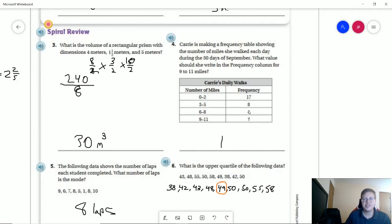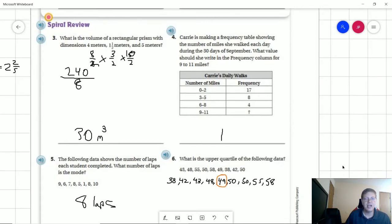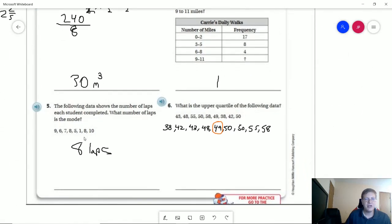There are only 30 days in September, so I have 25 days accounted for in my first two, plus four gives me 29, which means I only have one day left. For number five, the mode for number of laps would be eight, as it's the only number that is repeated.